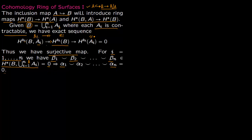So if a space B is covered with N contractible cells or spaces, then the cup product α_1 ∪ α_2 ∪ … ∪ α_N — where N is the size of the cover — will be equal to zero.